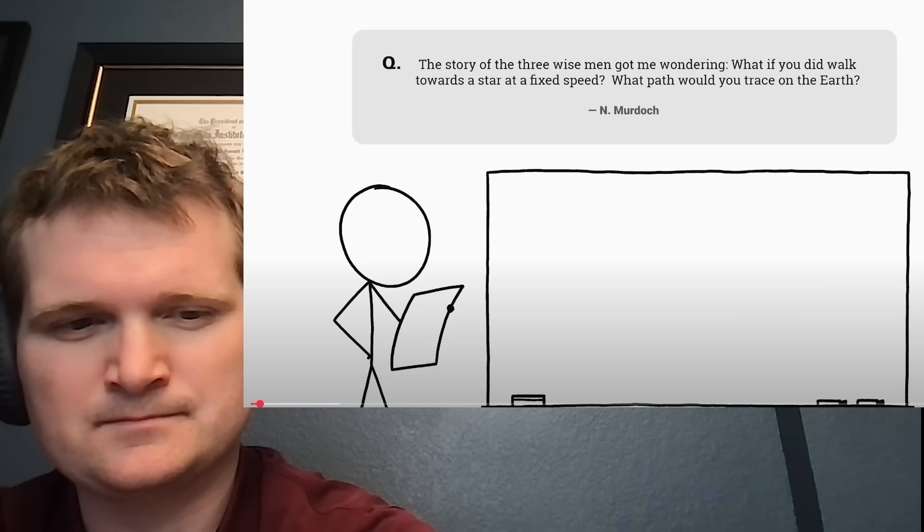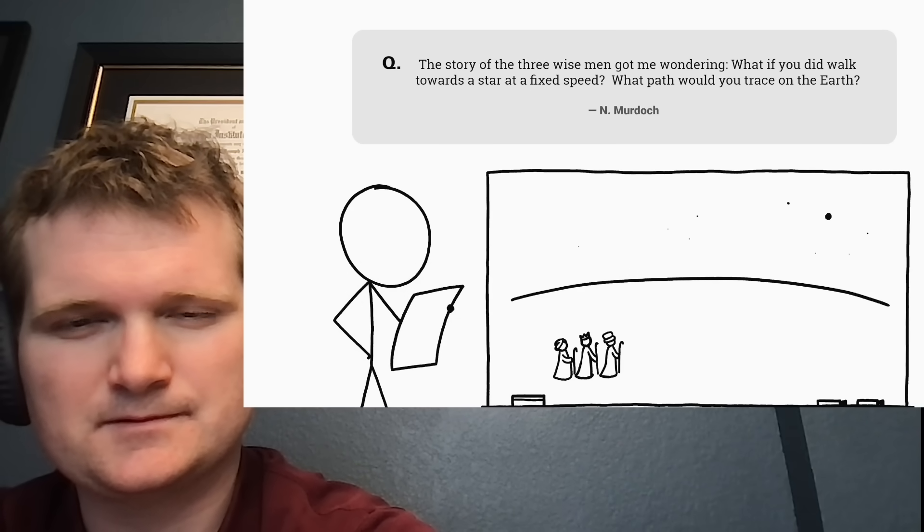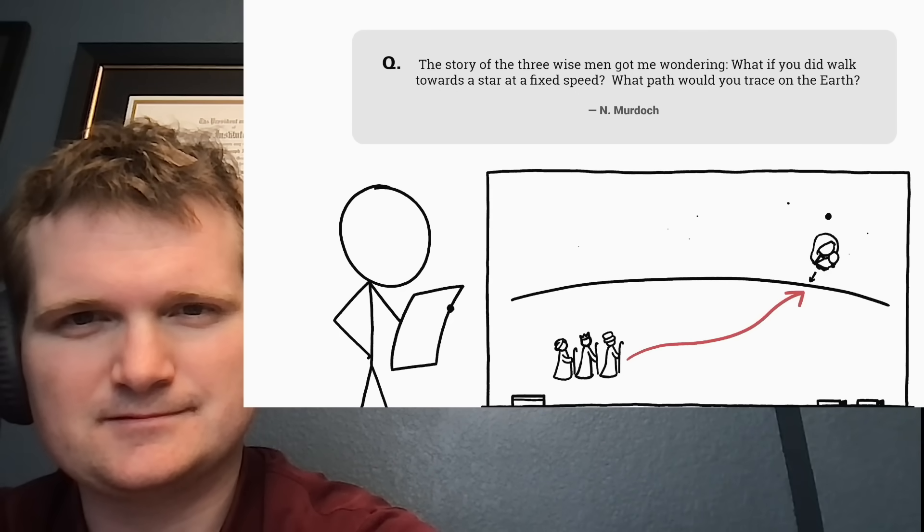This question comes from N. Murdoch, who was thinking about how the three wise men in the Christmas story followed a star to Bethlehem where they found the baby Jesus. The question is, what if you did walk toward a known star at a fixed speed? What path would you trace on the earth?